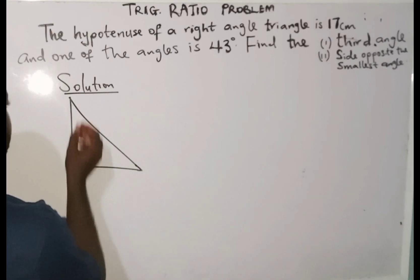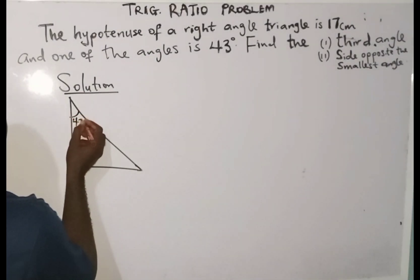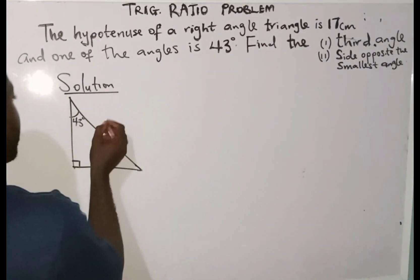Okay, now, one of the angles is 43 degrees, so I'm going to name this 43 degrees. And the hypotenuse, which is the longest side, is 17 cm.